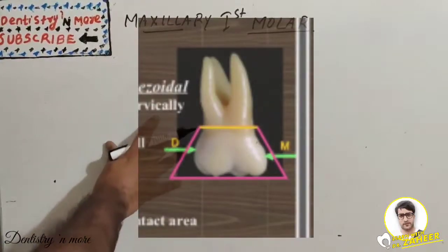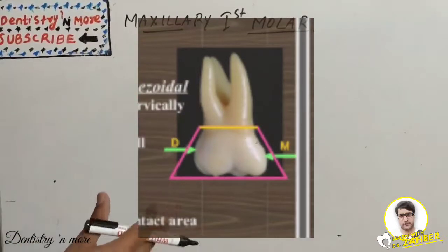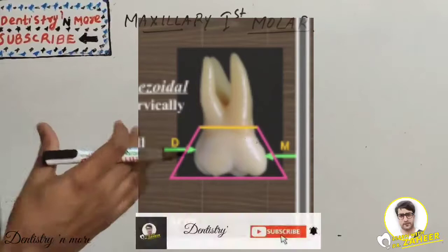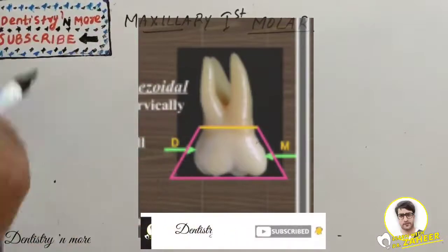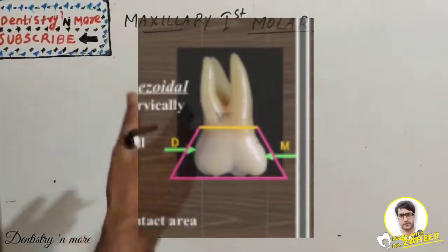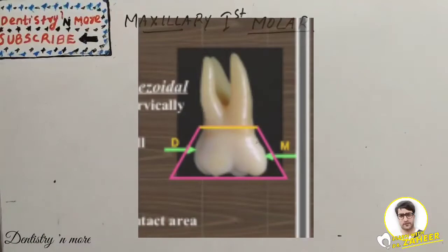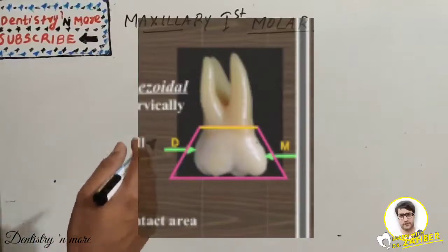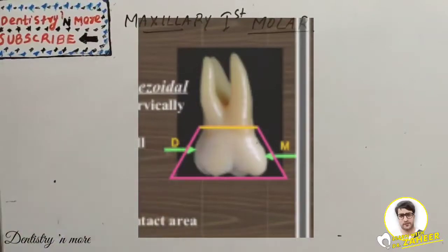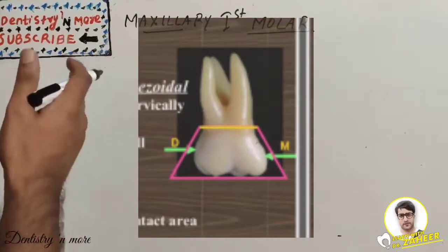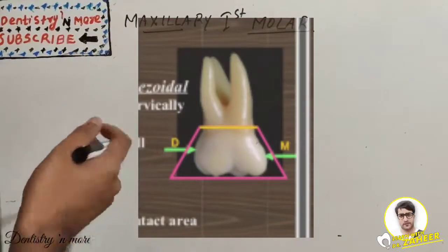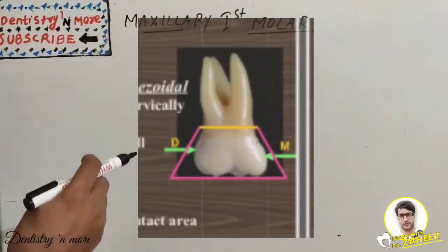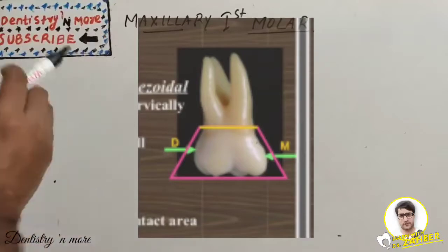From the buccal aspect, the geometric outline is trapezoidal with a small uneven side present cervically. The mesial outline is nearly straight till the contact area at the junction of the occlusal and middle one-third, whereas the distal outline is convex till the contact area at the middle of the middle one-third.